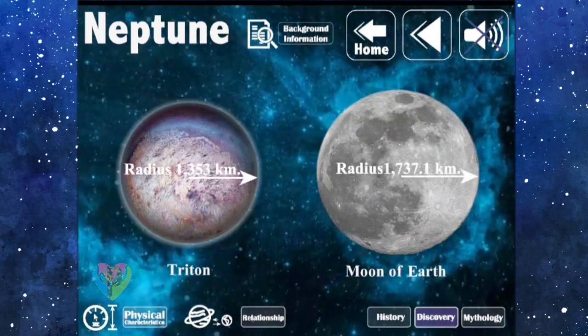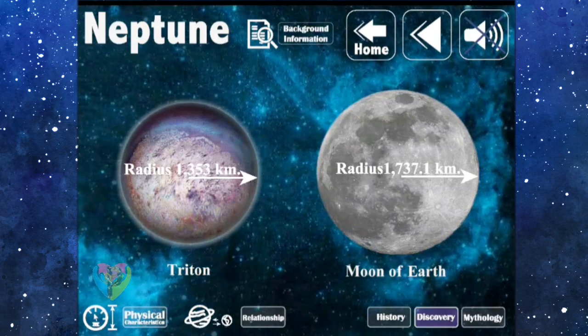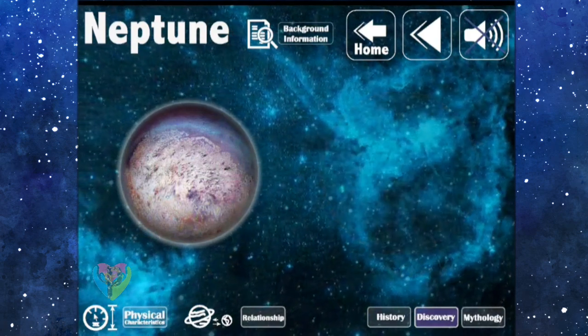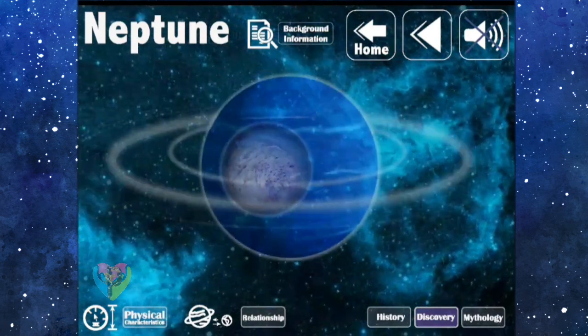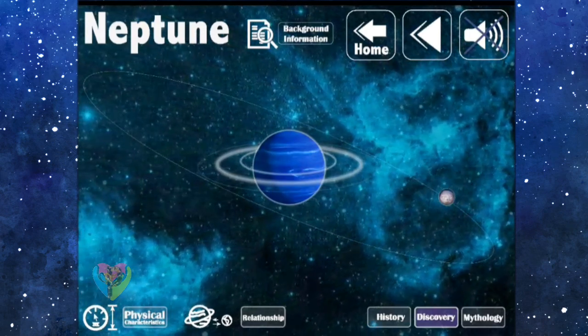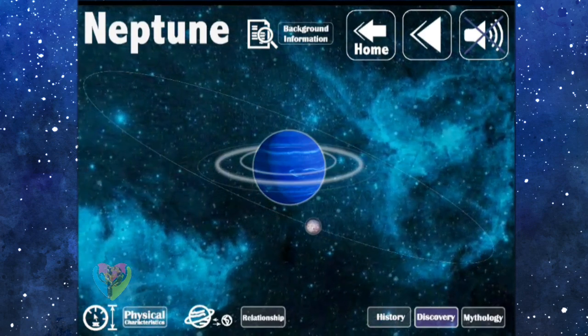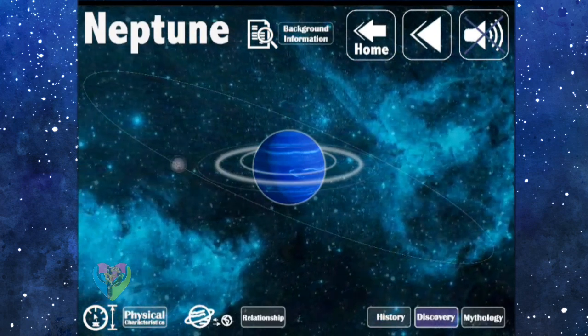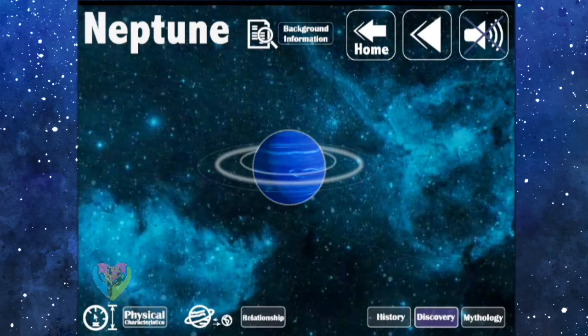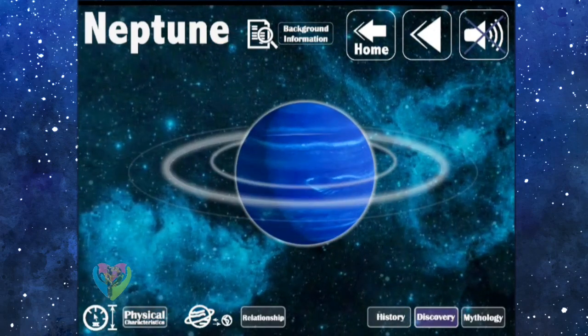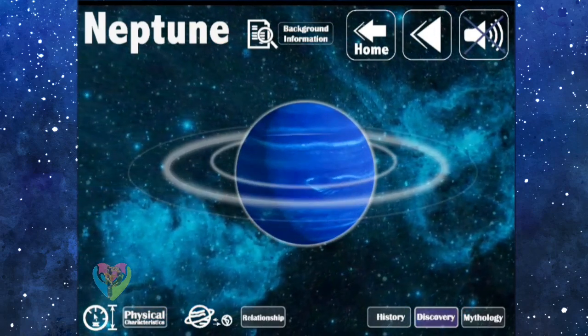It is assumed that Triton might have been a member of the solar system and orbited close to Neptune, then Neptune captured it as a natural satellite billions of years ago. The radius of Triton is about 1,353 kilometers, while the radius of Earth's moon is about 1,737 kilometers.